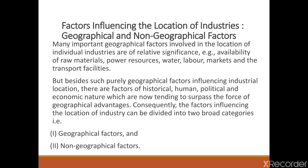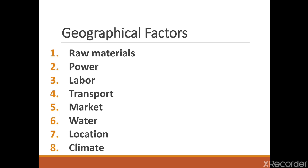Factors influencing the location of industries. Many important geographical factors and non-geographical factors affect the location of industries. The geographical factors such as availability of raw material, power resources, water bodies, labor, markets and transport facilities. Besides these geographical factors, other historical, human, political and economic factors also affect the location of industries. We are going to start with the geographical factor: raw material.